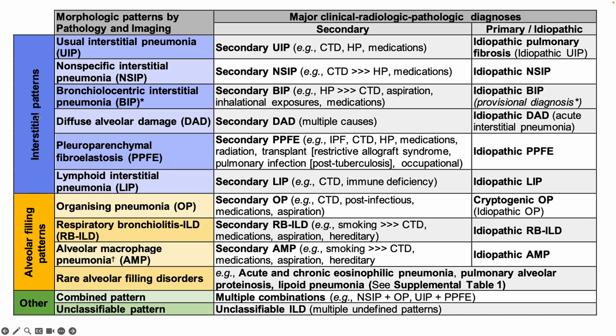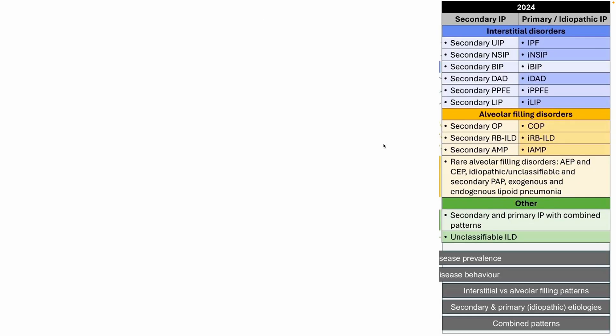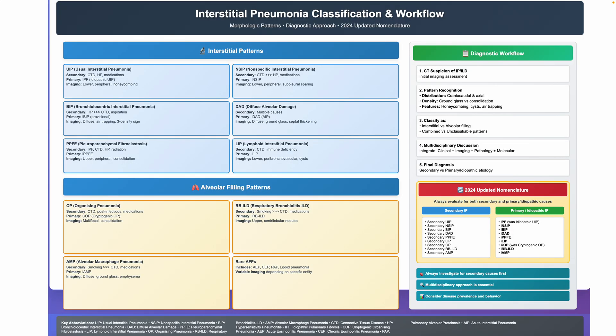There's a division into two patterns. The idea is that maybe we should first figure out whether these are interstitial disorders or alveolar filling disorders, and then put everything together. It does change the approach to some extent, especially with respect to terminologies and what further needs to be done, with a focus on finding secondary causes of all the patterns that we see.